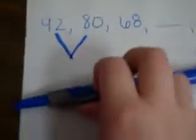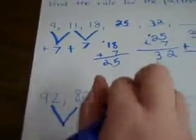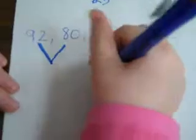What would be an easier way to do that? How about, instead of counting backwards, what could you do? I could subtract 92 from 80. There you go.